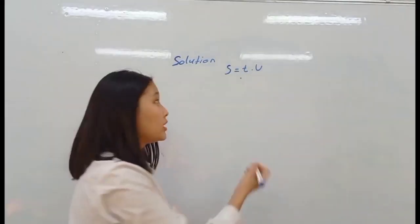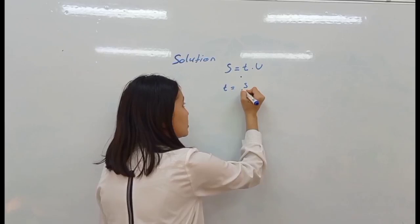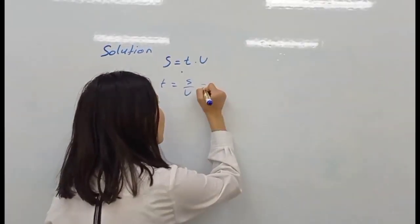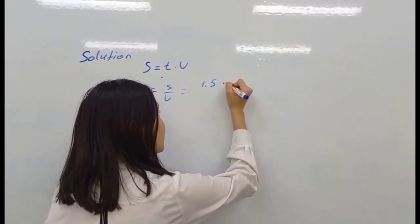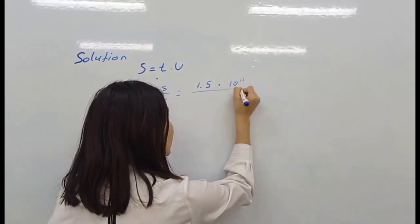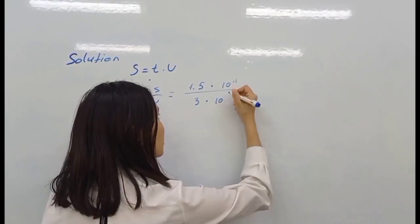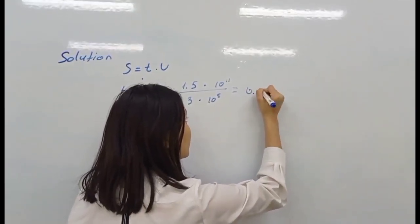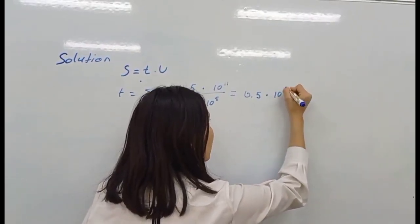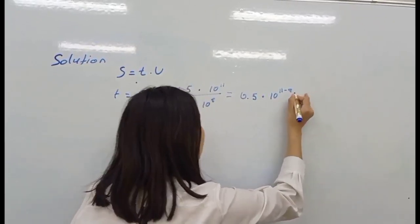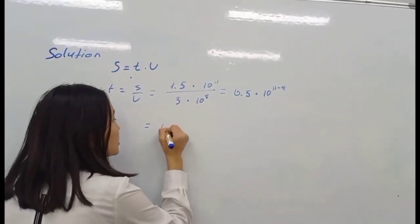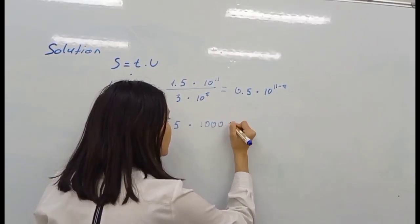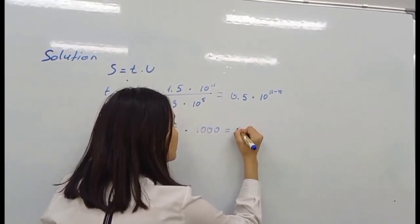So t will be equal to s over d. That gives us 1.5 multiplied by 10 to the power 11, over 3 multiplied by 10 to the power 8. This equals 0.5 multiplied by 10 to the power of 11 minus 8, which is 0.5 multiplied by 10 to the power 3.